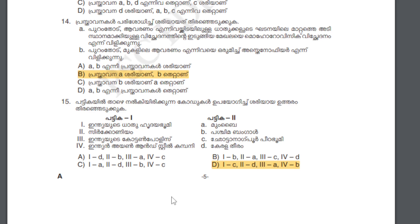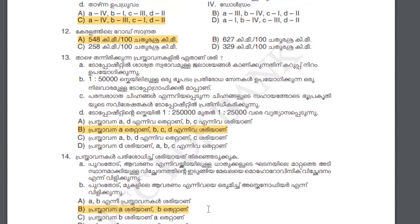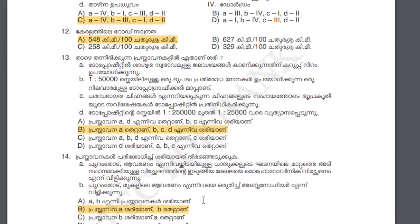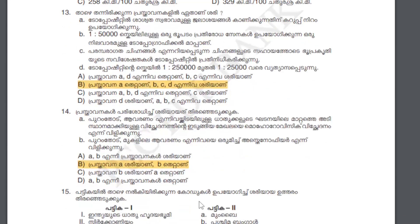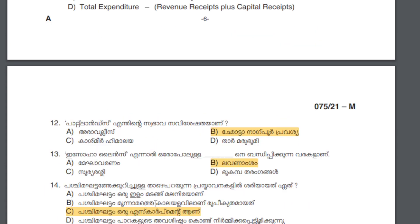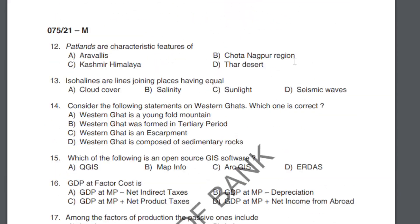So we are going to take a look at the next section. Here we are going to take a look at Indian Physiography. We are going to take a look at these two topics, and also the map and GIS system. This is a look at Indian Physiography. What are the pathlands? There are also Indian Physiography topics to cover.